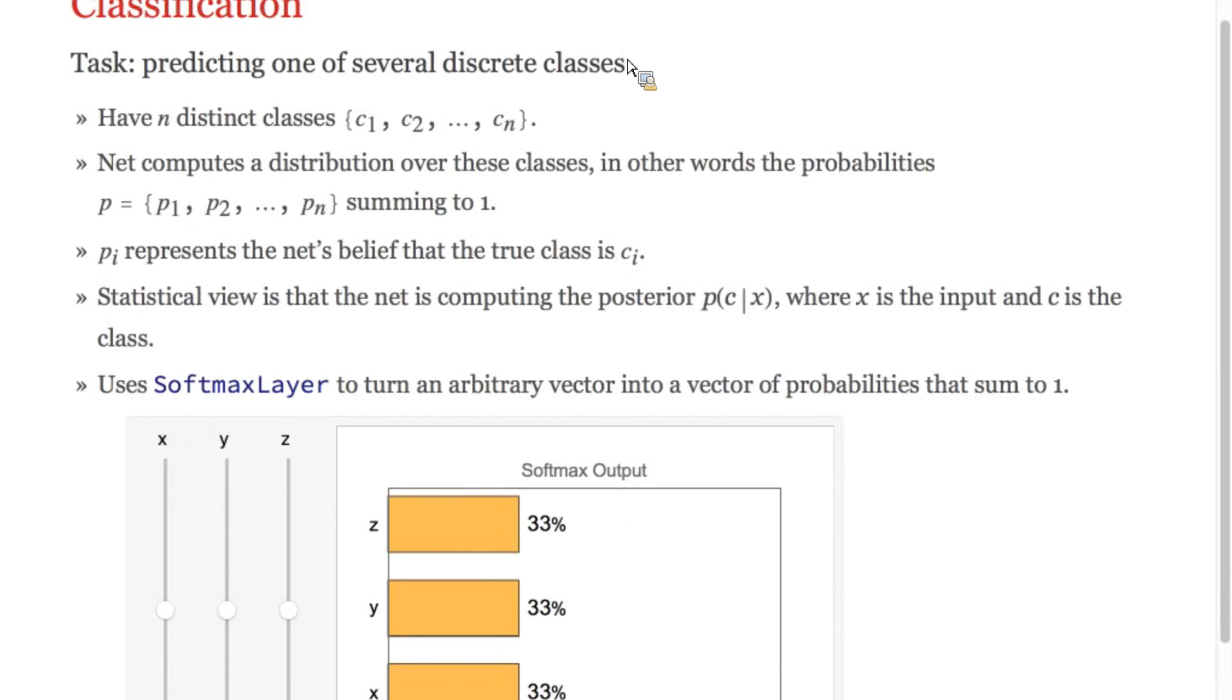Classification involves trying to predict a class variable, which is an output that takes one of a discrete set of values. For object recognition, for example, the classes could be strings like dog, cat, and so on.